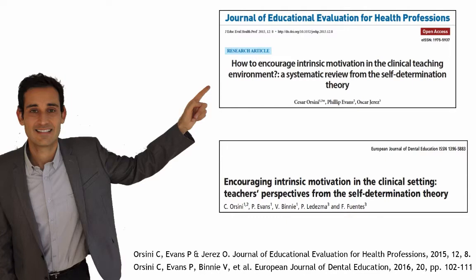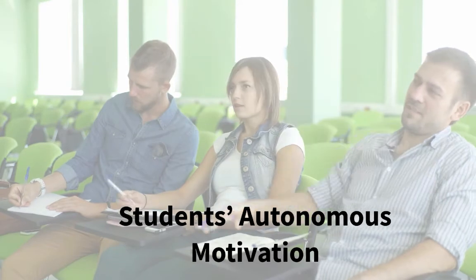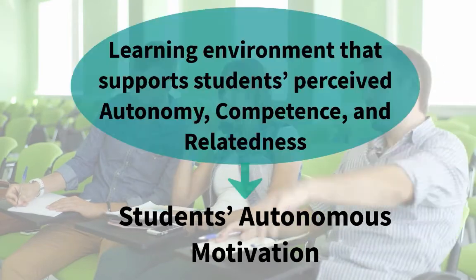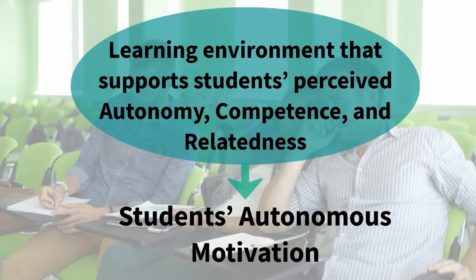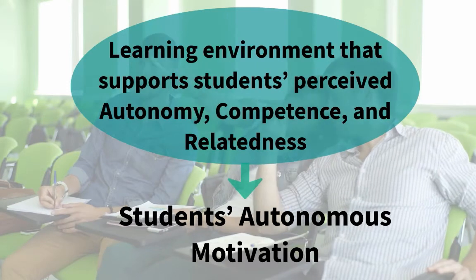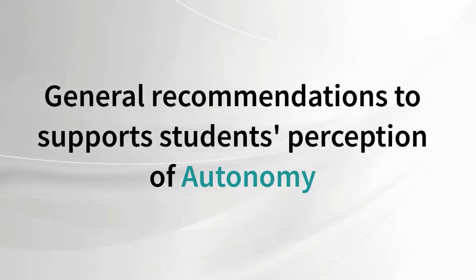The following recommendations and tips are mainly based on these two papers. If you would like to read them, I'll leave the links in the description below. We now know that in order to promote autonomous motivation, we should develop a learning environment that supports students' perceived autonomy, competence, and relatedness. So let's start by seeing a few ways in which we can support their autonomy.